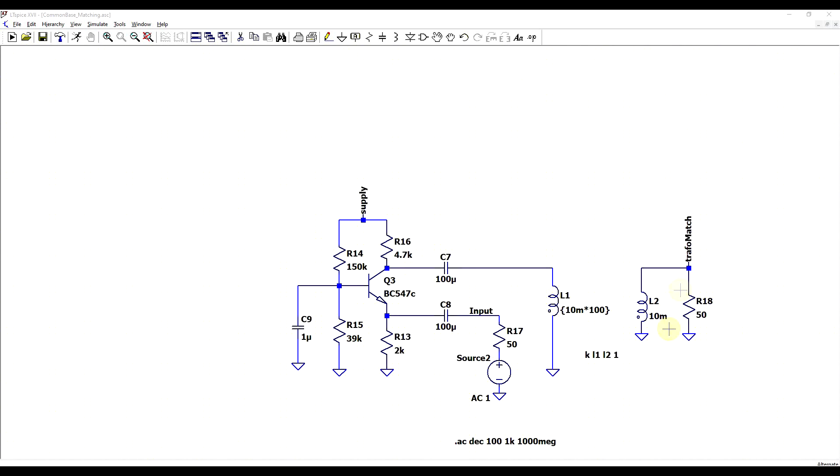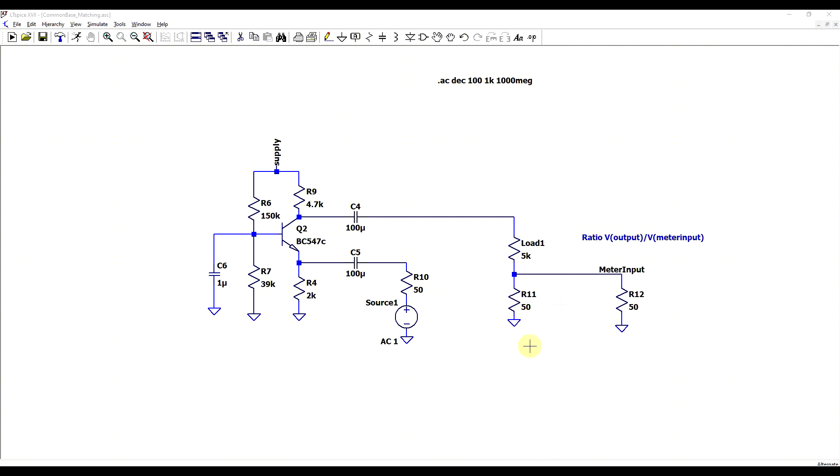One thing you could do is use a matching transformer that has an inductance ratio of 1 to 100, to transform the 5 kilo ohms to 50 ohms, and this would be a very nice wideband and lossless matching technique. However, specifically for the case of just performing a measurement, losses are not really an issue, as long as we are taking them into account. The easier way of doing things is to use a resistor-based matching circuit that will take the 5 kilo ohms into our 50 ohm port.